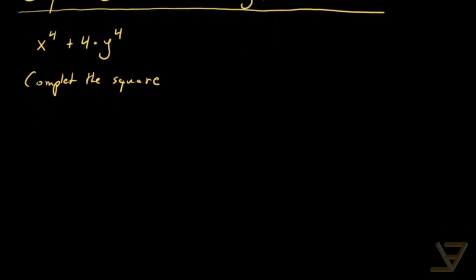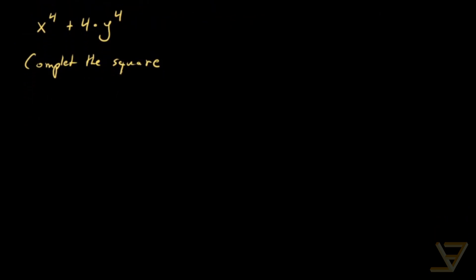Now usually when we complete the square we insert a constant term, but in this case we'll be inserting the middle term. So what we get is that x to the power of 4 plus 4y to the power of 4 is equal to x squared squared plus 2y squared squared.